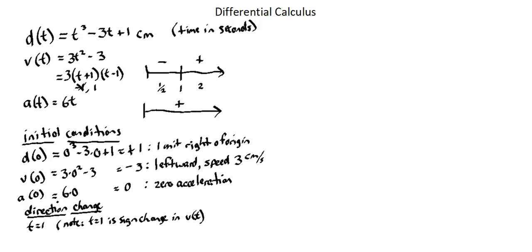It's possible that for other velocity functions there is more than one sign change, and if that's the case, every time there's a sign change there's a change in direction. Now, if I want to locate where I am at that point, I'm going to put the input of 1 into the displacement function. I evaluate the direction change based on the velocity function, but to identify where I am at that point in time, I use the displacement function.